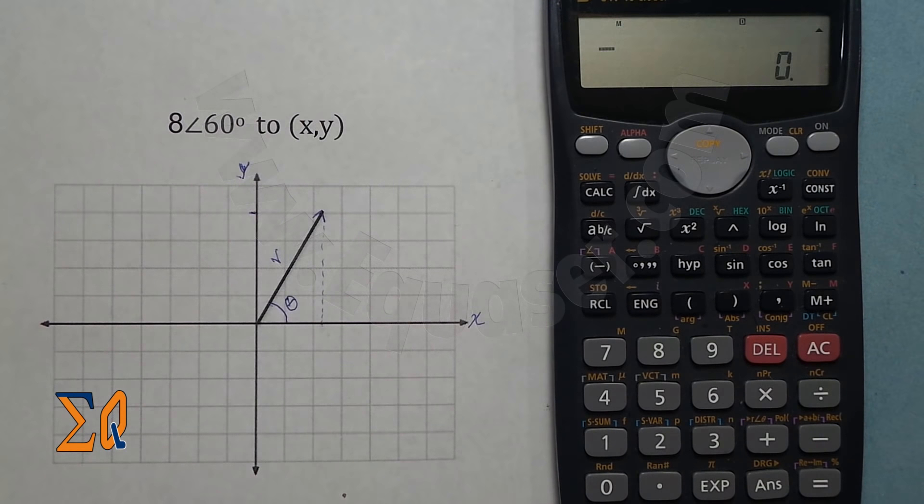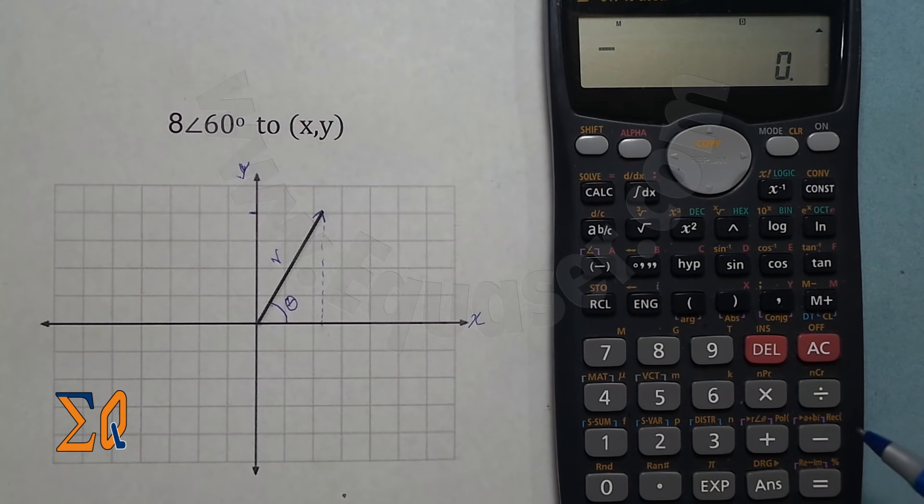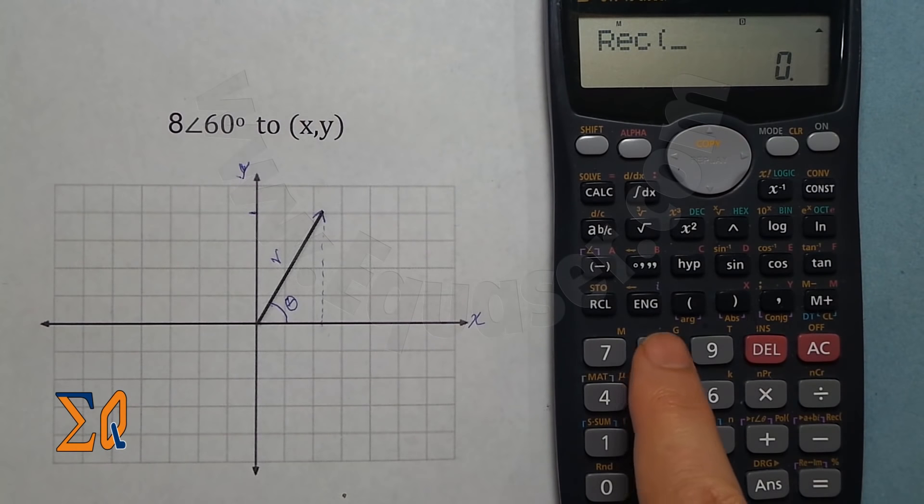We have a button here which says REC, rectangle, very small. So press shift and right, enter 8 and then comma, 60 degrees.